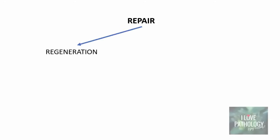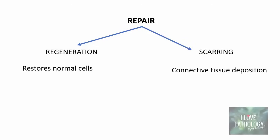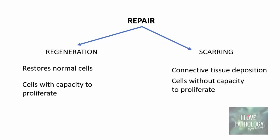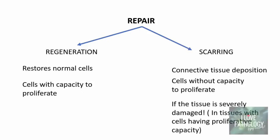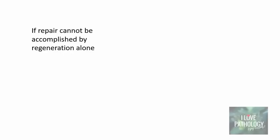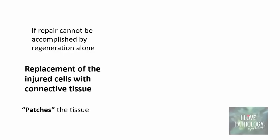Briefly recollecting what we discussed in the last tutorial: repair occurs by two processes — regeneration, which restores normal cells, and scarring, which is connective tissue deposition. Regeneration occurs in tissues where cells can proliferate, whereas scarring occurs in tissues where cells lack the capacity to proliferate, or if the tissue is very severely damaged. Today's tutorial focuses on scarring, where injured cells are replaced with connective tissue, patching the tissue — referred to as scar formation.